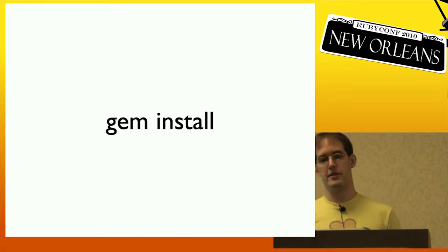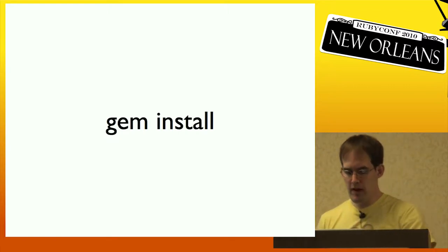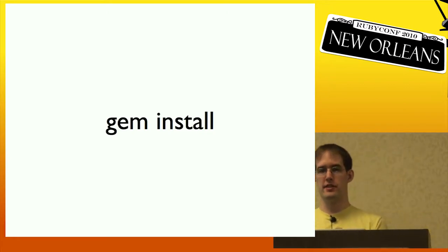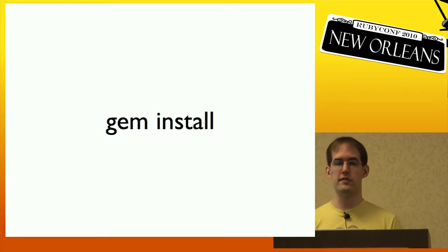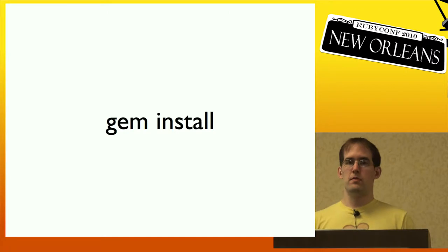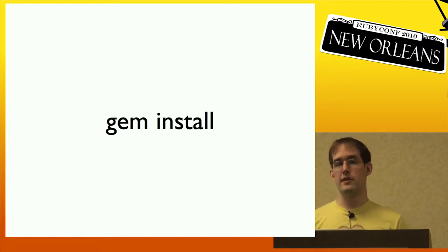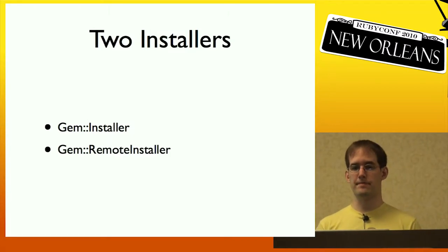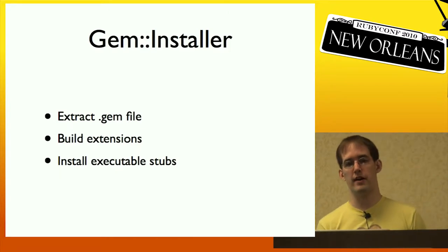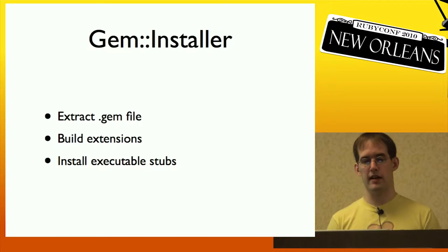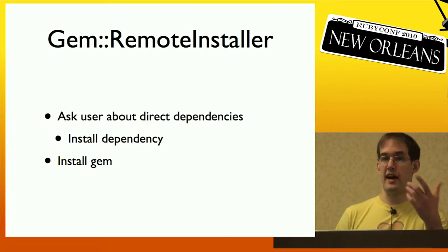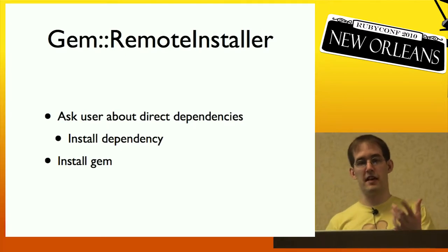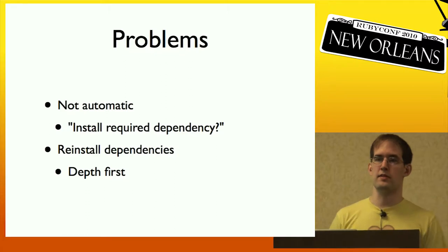Fire Brigade drove my first major contribution to RubyGems, which was the gem installer. I wanted a tool that would download every gem, install it into a clean environment, run the tests on that gem, and report that to a website. In order to do this, I needed a way to automatically install all these gems in a sandbox. This was too hard with the original installer. When I started, there were two classes: the gem installer and the gem remote installer. The gem installer extracted the gem file, put all the files in the right place, built the extensions, and installed the executables. The remote installer would download the gem, figure out if there were any dependencies, ask the user if they want to install the dependency, and then install the gem. The problem was it wasn't automatic enough.